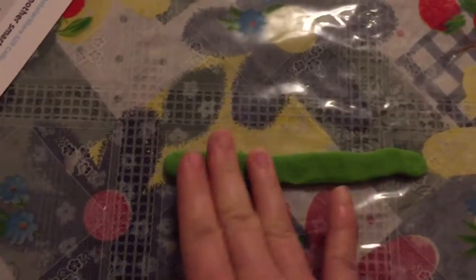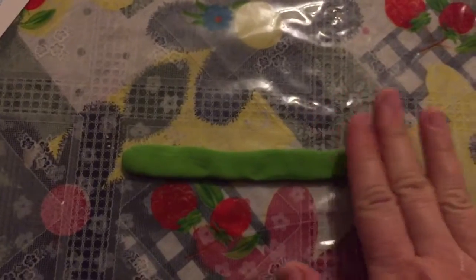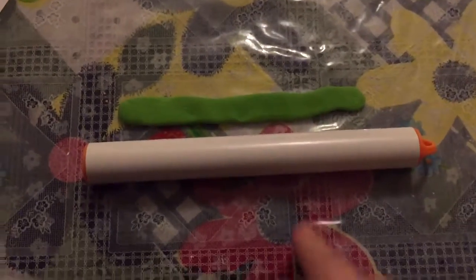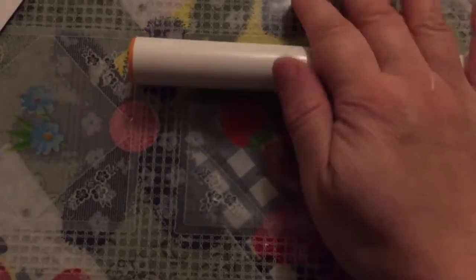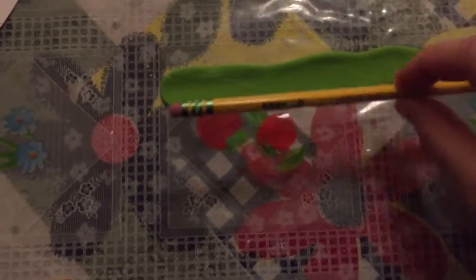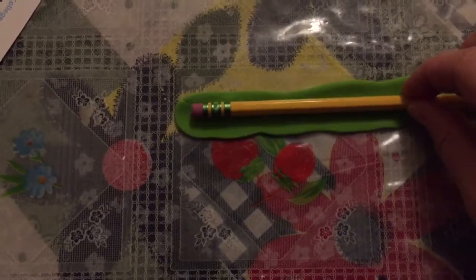Now roll it out into like a long rope, then you put your roller across it and gently press it down to make it thin. After that you get a pencil, about the size you want, and put it at the top on here.